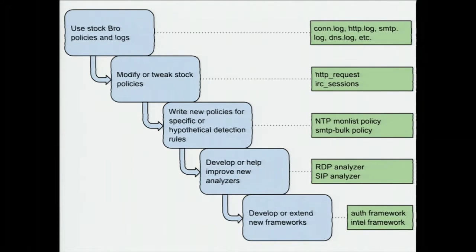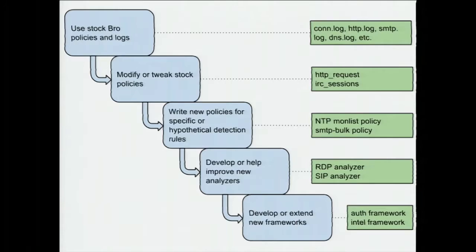We created a waterfall diagram showing how we use Bro for incident response, or how someone new to Bro would approach it. You'd start with stock Bro policies and logs — the conn log, HTTP log, all the familiar ones. After a while you find something that informs your detection and you modify policies. We'll go through incidents that made us realize we needed a new policy, tweak, new analyzer, or new framework.